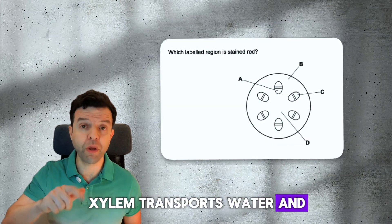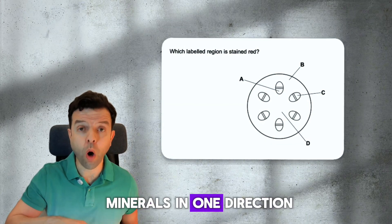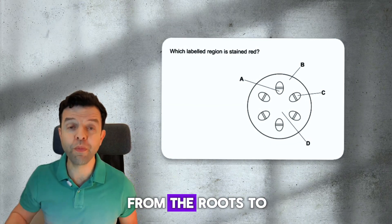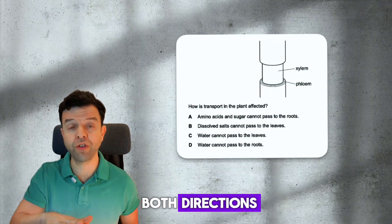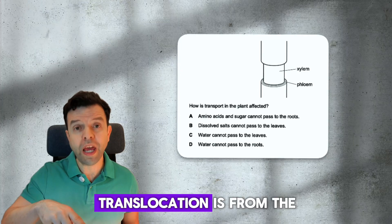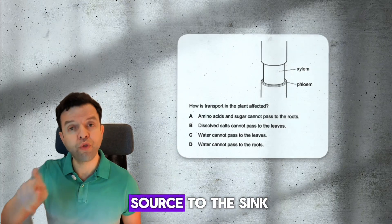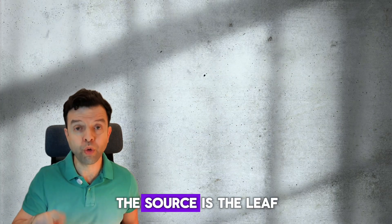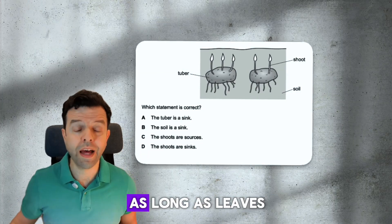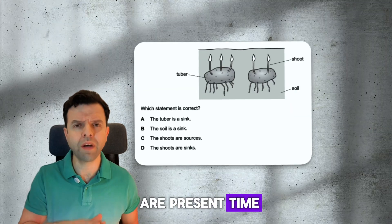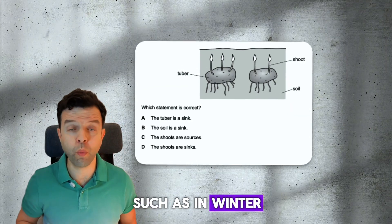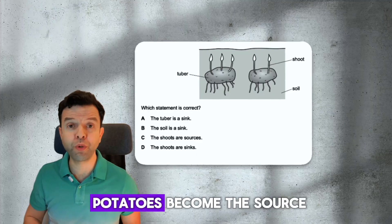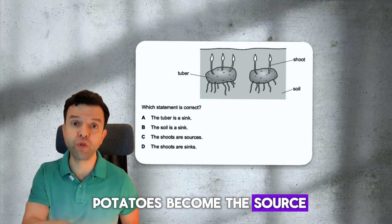Xylem transports water and minerals in one direction, from the roots to the leaves. Phloem transports sucrose and amino acids in both directions. Translocation is from the source to the sink. The source is the leaf as long as leaves are present. When leaves are missing, such as in winter, storage organs such as potatoes become the source.